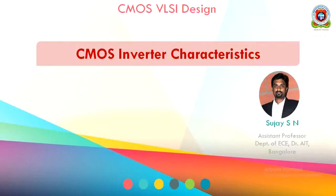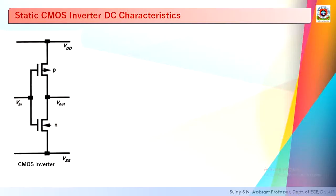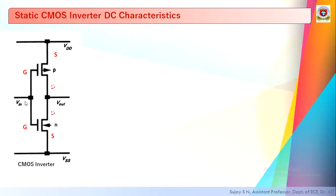Welcome to this video lecture on CMOS inverter characteristics. The static CMOS inverter DC characteristics will be explained here. The CMOS inverter is constructed using one PMOS transistor and one NMOS transistor. VDD is connected as the power supply and VSS as ground. VIN is the input voltage given to the gates of both transistors, with VDD and VSS connected to their sources, and VOUT taken from the drain.